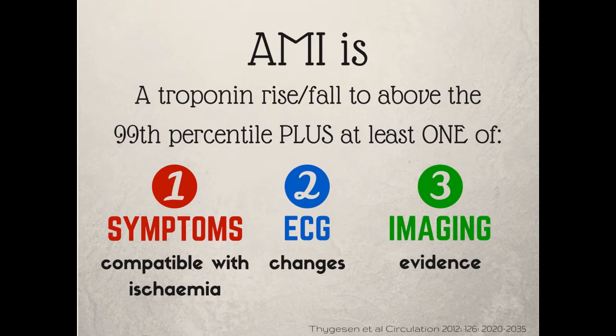There might be a wall motion abnormality that wasn't there before. Or on angiography, you might detect an intracoronary thrombus. You need one of those additional things — only one of them, though you can have more than one — and a troponin rise or fall. Then you fulfil the criteria for the diagnosis of an acute myocardial infarction.